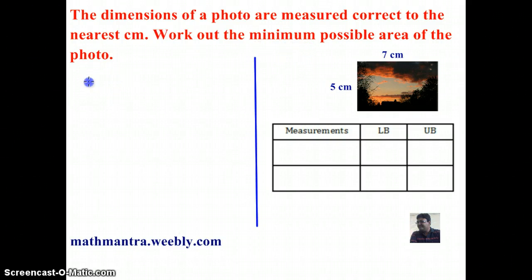We know that the area of a rectangular frame is given by base times height. But here we are supposed to work out the minimum possible area, which means that for each of these dimensions I need to get the lower bounds. So it also means that I'm not going to need the upper bounds.